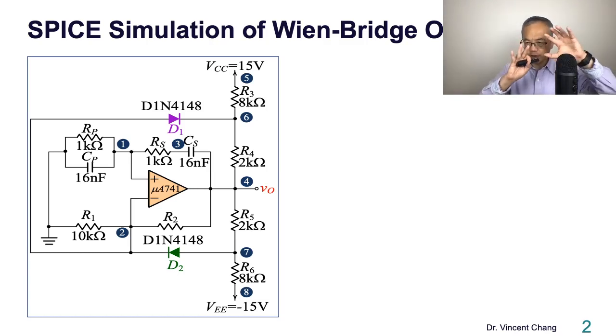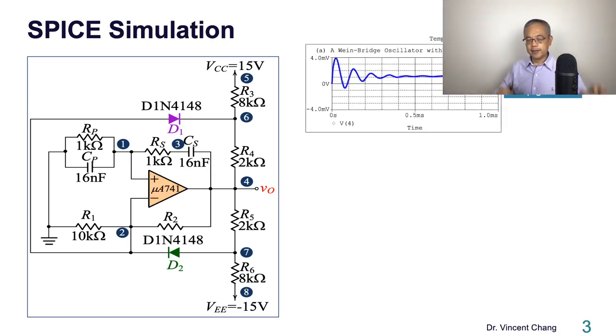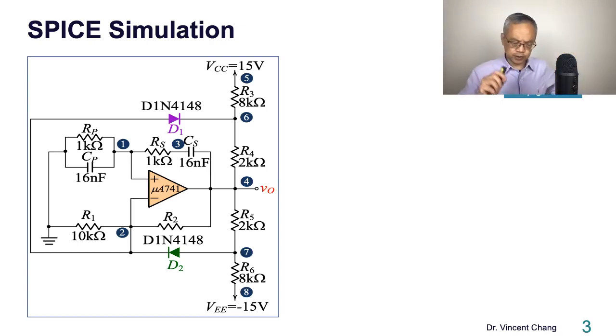The four resistors are connected to the positive and negative supply respectively. Now here's the SPICE simulation result. The learning objective of this lecture has two folds.